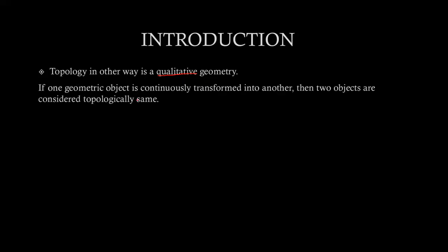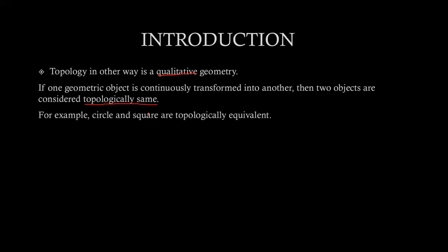For example, if we take a geometric object and we transform it continuously into another object, then we say that these two objects are topologically the same. Similarly, we can say that a circle and a square are topologically the same.